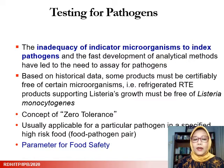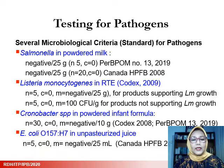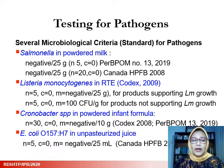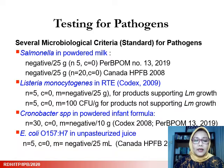Testing of pathogens is a parameter for food safety. There are several microbiological criteria for pathogens in food. Salmonella in powdered milk, for example, is regulated to be negative in 25 grams with n=5 (five randomly picked samples). Canadian regulations also require negative Salmonella in 25 grams, but with 20 samples. Codex Alimentarius (2009) regulates Listeria monocytogenes in ready-to-eat foods: for products supporting its growth, 5 samples must all be negative in 25 grams; for products not supporting growth, 5 samples must not exceed 100 colony-forming units per gram. There are also regulations for Cronobacter spp. in powdered infant formula and E. coli O157:H7 in unpasteurized juice.